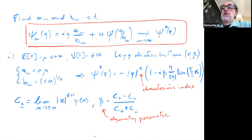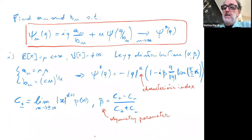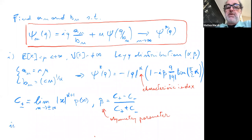The Lévy distribution depends on two parameters: alpha, called the characteristic index, and beta, called the asymmetry parameter. There is no explicit closed form for the probability distribution p-star of a Lévy distribution, but one can compute it via the inverse Fourier transform starting from the cumulant generating function.